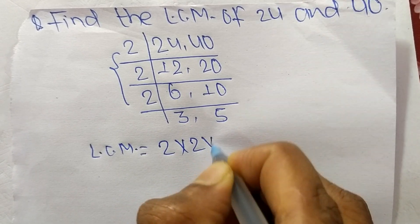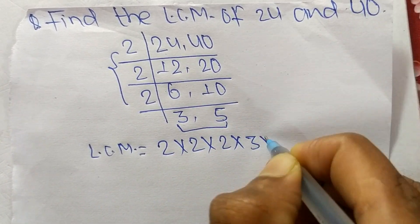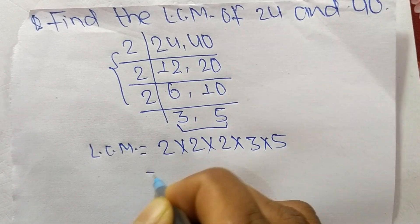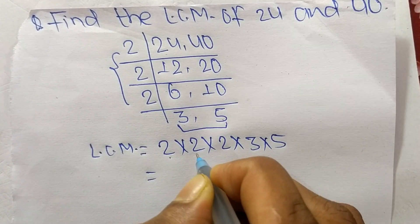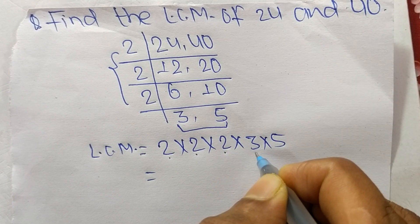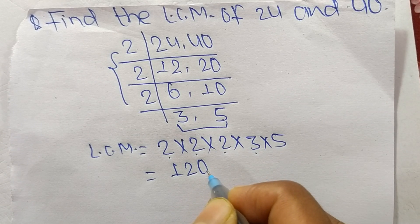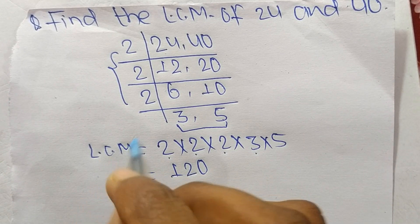So the LCM is equal to 2 times 2 times 2 from this part and 3 times 5 from this part. 2 times 2 means 4, 4 times 2 is 8, 8 times 3 is 24, 24 times 5 means 120.